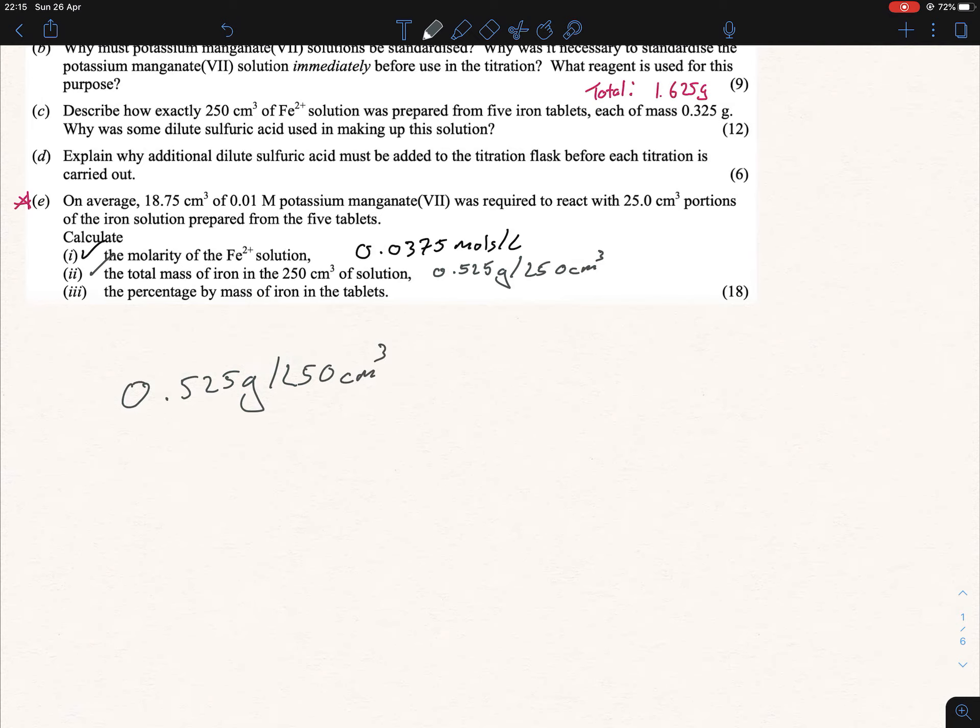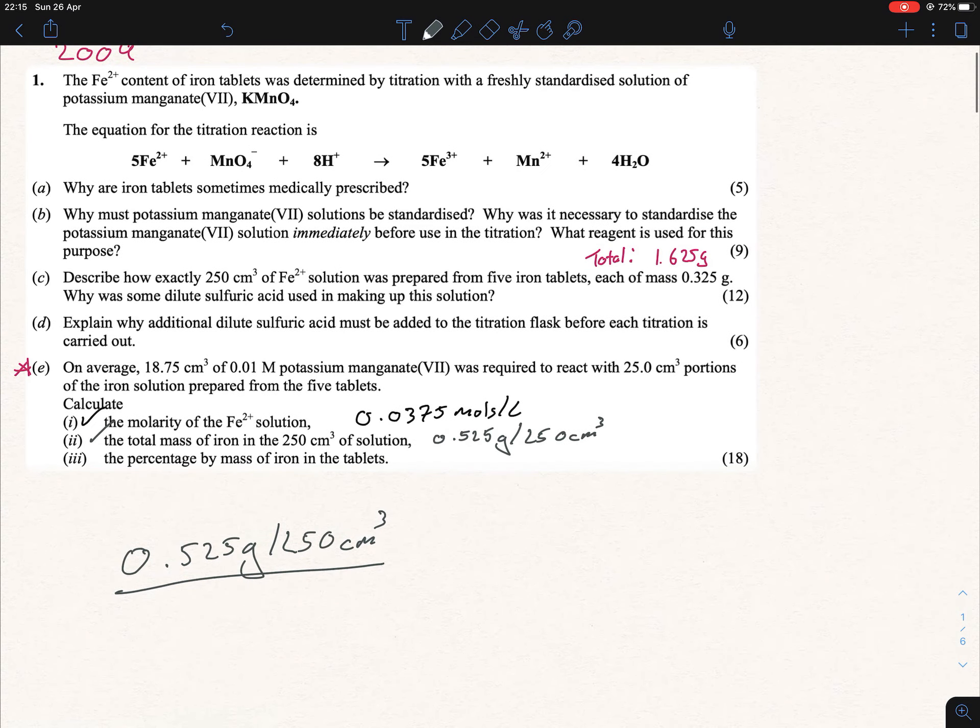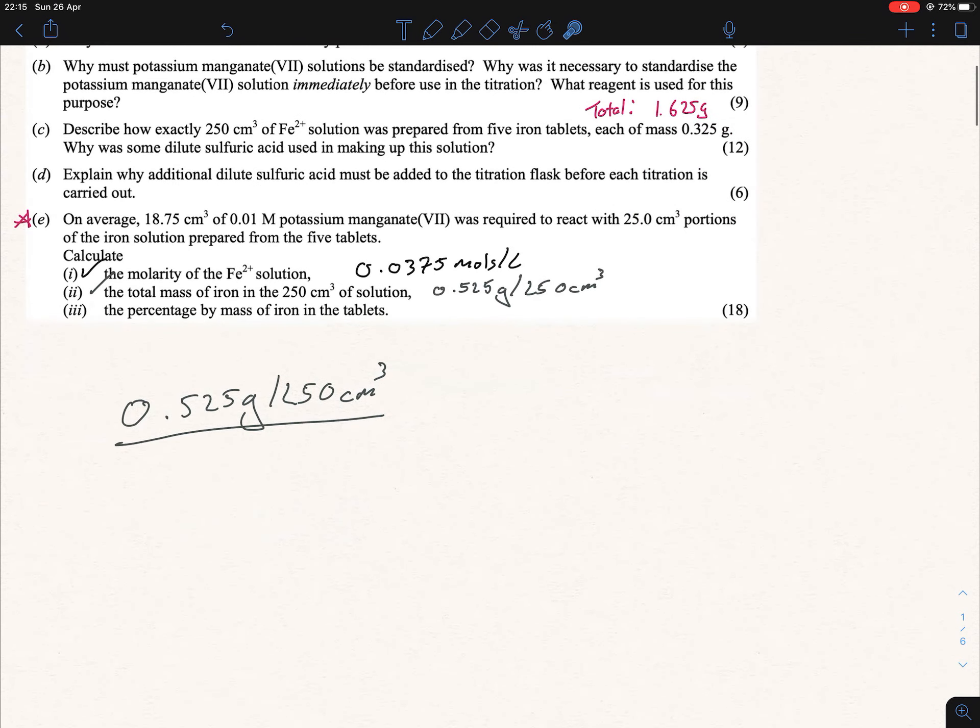How much iron was there in total in that 250 cm³? We go back up here - there was actually 1.625 grams in total. Remember how I was saying there's going to be binding agents and other stuff in it? That's where that's coming from: 1.625 grams dissolved in 250 cm³. We're looking for a percentage, so we'll times that by 100. So it's 0.525 divided by 1.625 times 100. If you do that correctly, you'll get 32.3%.